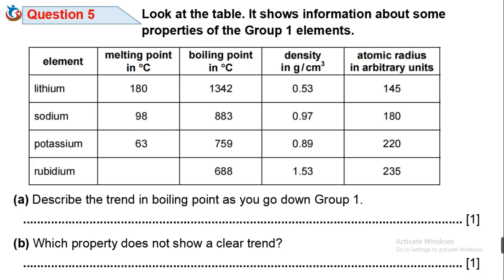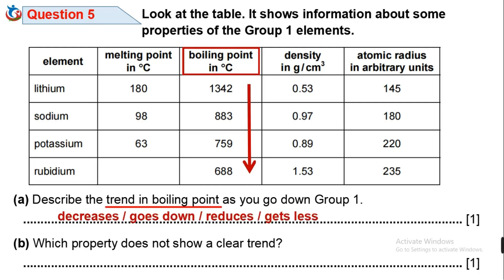Observe the boiling point column highlighted with a red box. You will notice that the boiling point decreases from 1342 to 883, from 883 to 759, then to 688. Hence, the boiling point of group 1 elements decreases, goes down, or reduces down the group — all these terms are acceptable.